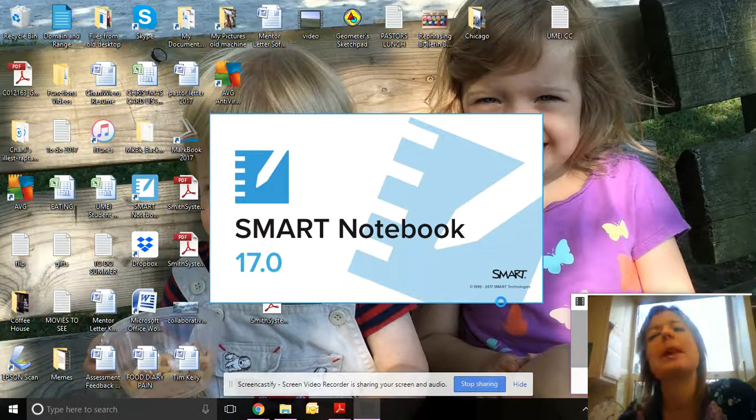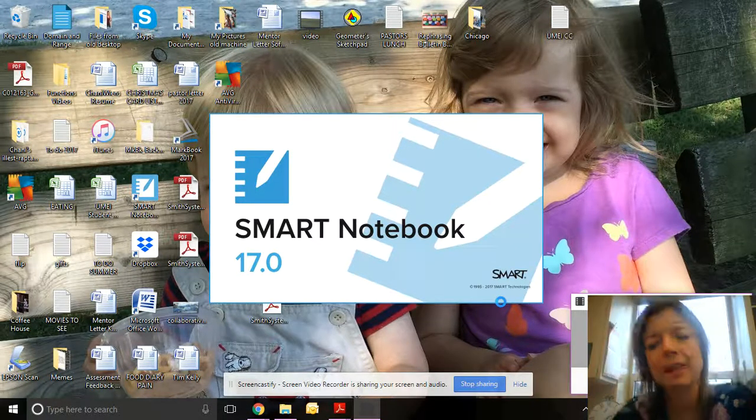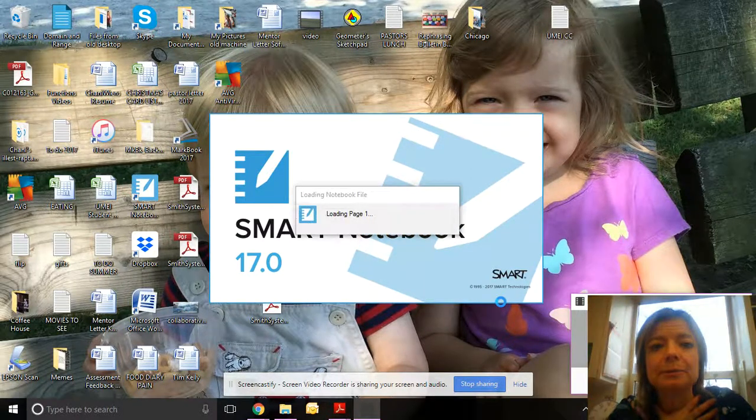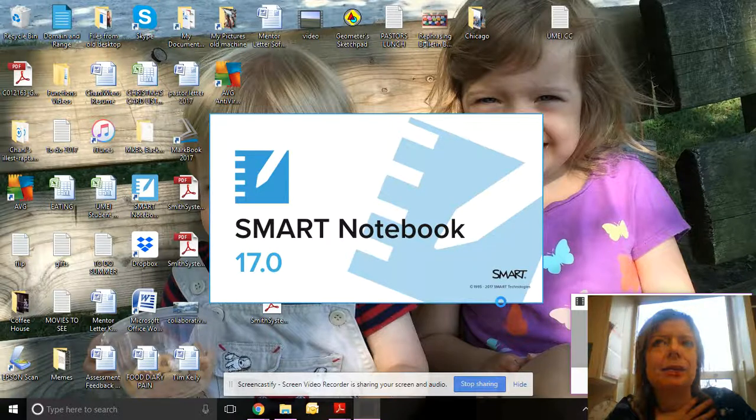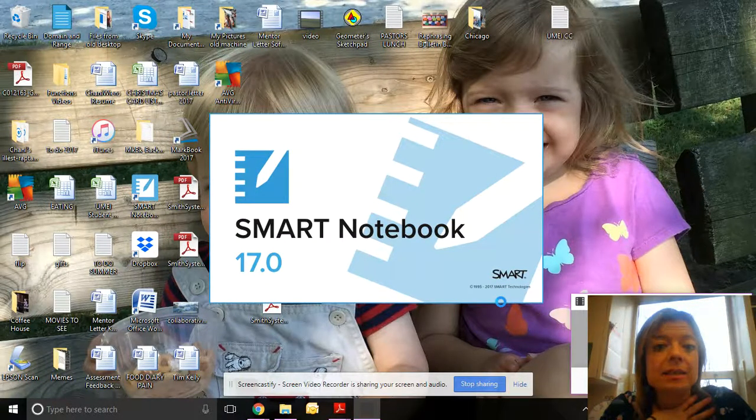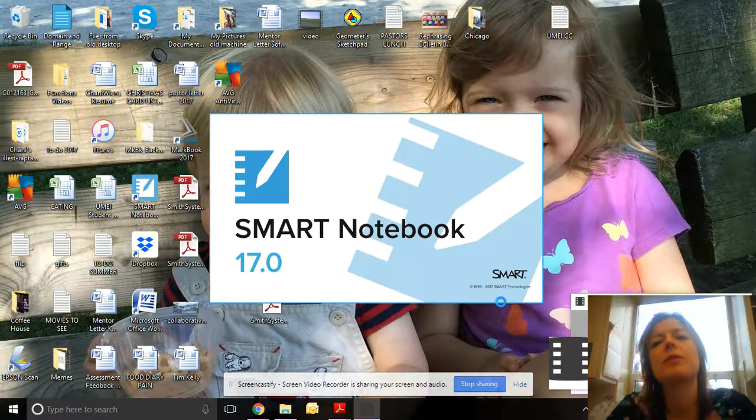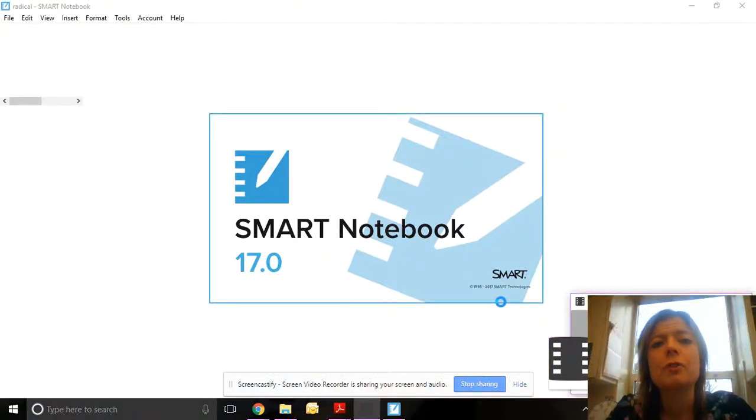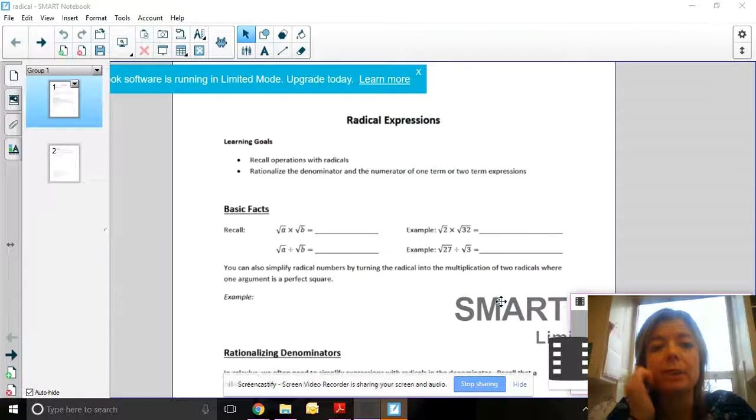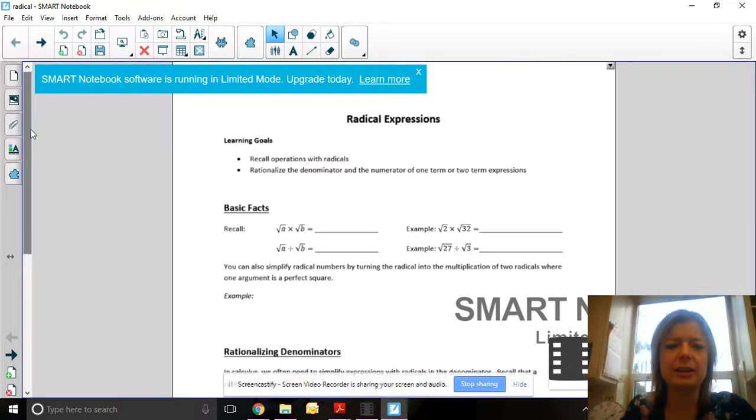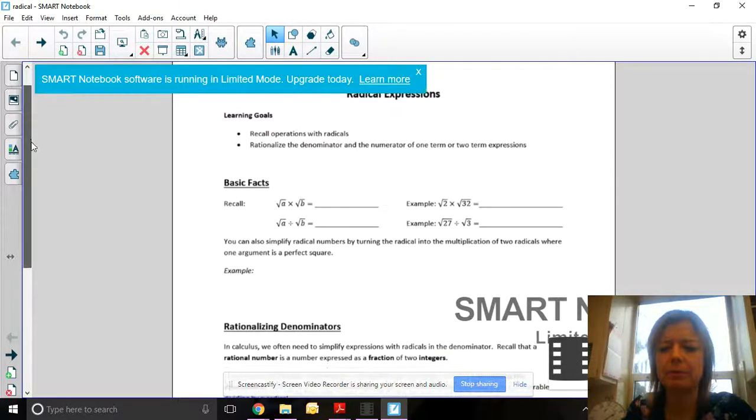In math, we don't like to have anything with a square root sign in the denominator of a fraction, just like it would look weird to have a decimal on the denominator of a fraction. For example, if you had 1 over 2.5, you would multiply both the top and the bottom by 2 to get 2 out of 5. We do something similar with radical expressions so that they look nicer and we can work with them.